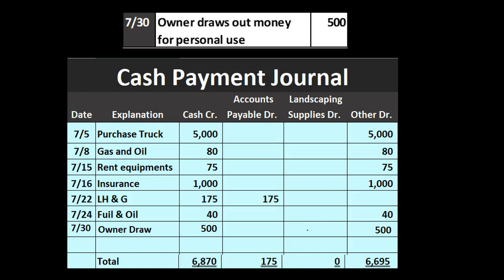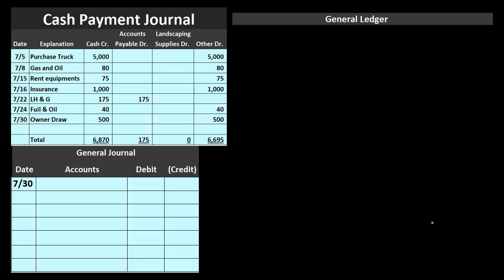Once we have all entries, we total everything up. On the cash side, cash goes down: $500 + $80 + $75 + $1,000 + $175 + $40 + $500 = $6,870. The accounts payable column brings down $175. Nothing is in the landscaping supplies column because we typically purchase those on account, but that column is important for businesses like landscapers. The 'other' column totals: $5,000 + $80 + $75 + $1,000 + $40 + $500 = $6,695.